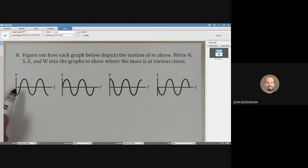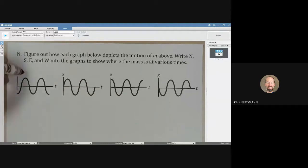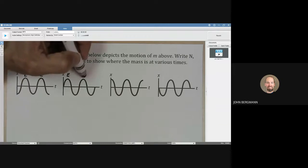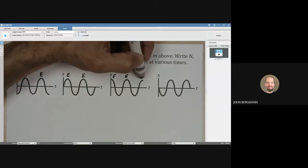So the positive x values, you might remember, were east. So every time I have a peak here, that's going to be the point that I've labeled east on the earlier pages.